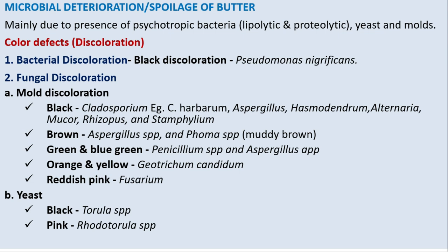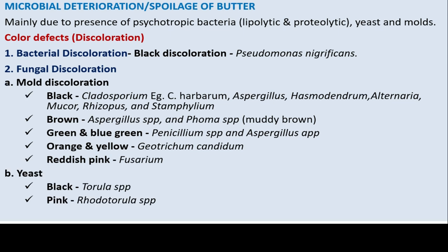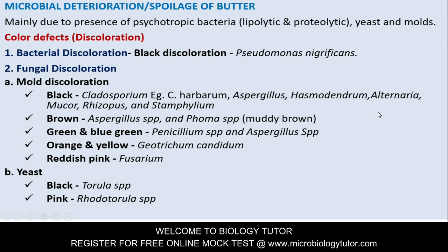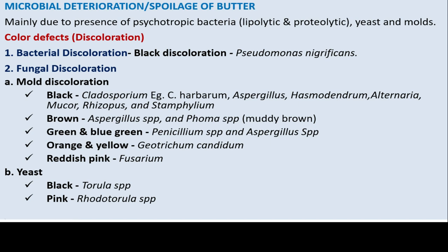Microbial deterioration of butter is mainly due to psychrotrophic bacteria (lipolytic and proteolytic), yeasts, and molds. Color defects: bacterial black discoloration is caused by Pseudomonas nigrifaciens. Fungal discoloration: black discoloration due to Cladosporium (e.g., Cladosporium herbarum), Aspergillus, Hormodendrum, Alternaria, Mucor, and Rhizopus; brown color due to Aspergillus species; muddy brown due to Fusarium species; green and blue color due to Penicillium and Aspergillus species; orange and yellow due to Geotrichum candidum; reddish pink due to Fusarium; black due to Torula species; pink due to Rhodotorula species.